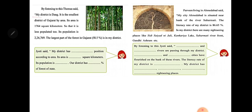Thomas said: my district is Dang. It is the smallest district of Gujarat by area. Its area is 1,764 square kilometers and it is less populated too, with a population of 2,26,769. The largest part of the forest in Gujarat — around 58.5 percent — is in my district. He said this very proudly.